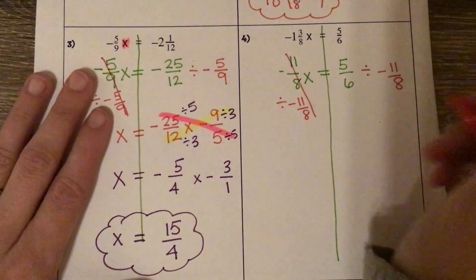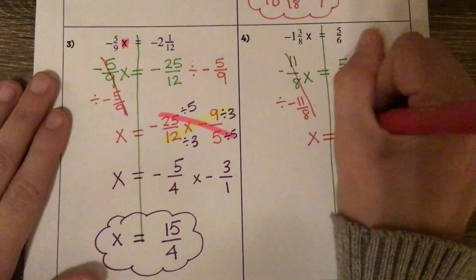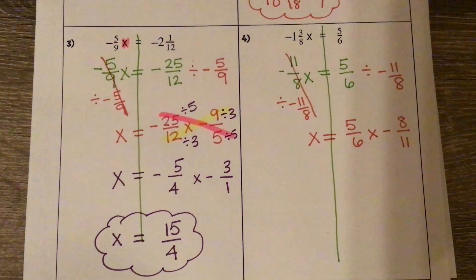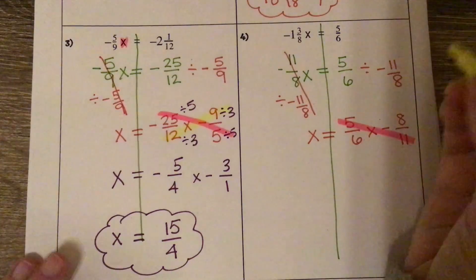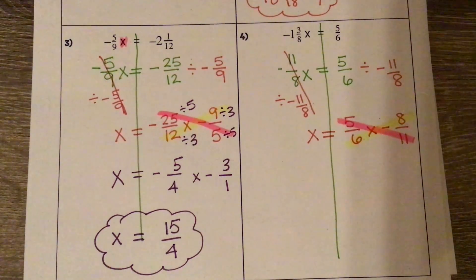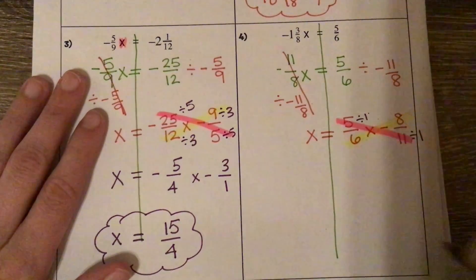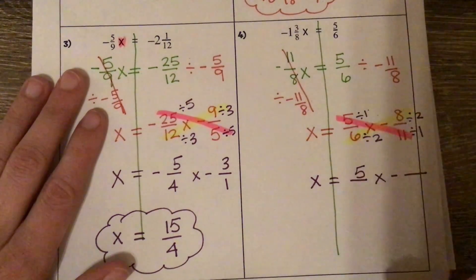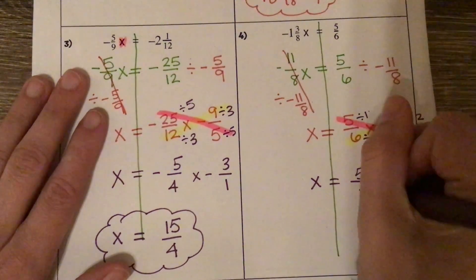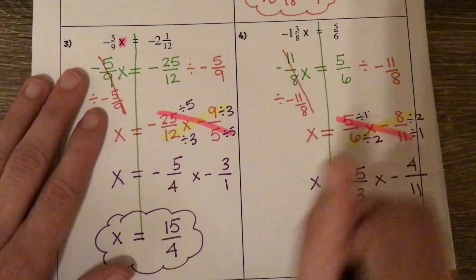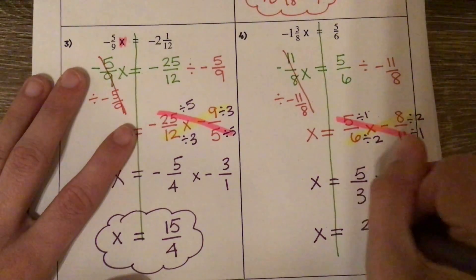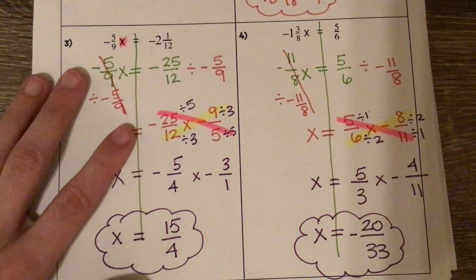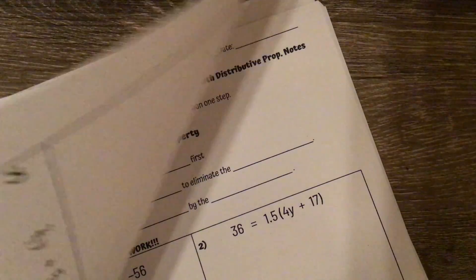It cancels out on the side with the variable. Over here, we need to keep it, switch it, flip it. Let's check our diagonals to see if it simplifies. 5 and 11 in one diagonal — they don't divide by anything other than 1. 6 and 8 in the other — they divide by 2. So: 5 divided by 1 is 5, 11 divided by 1 is 11, 6 divided by 2 is 3, 8 divided by 2 is 4. Multiplying across: 5 times 4 is 20, 3 times 11 is 33. Positive times a negative is a negative. That one isn't improper — it's fine to leave it as a fraction.